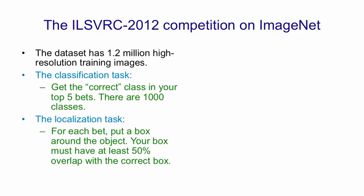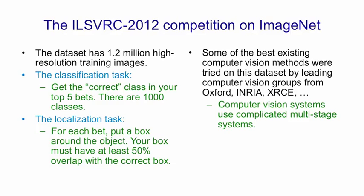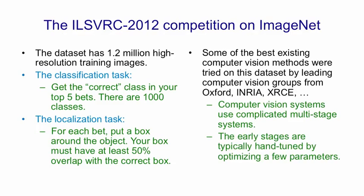For the localization task, you have to place a box around an object once you've recognized it, and to get it right, your box must have at least 50% overlap with the correct box. Leading groups from Oxford, the French National Research Labs (INRIA), Xerox's European Research Center, and various other universities tried this task and found it very hard. These computer vision systems typically use complicated multi-stage systems where early stages are hand-tuned and only the top stage uses a learning algorithm — they don't have end-to-end learning where early feature detector parameters are influenced by how useful they are for the final class decision.